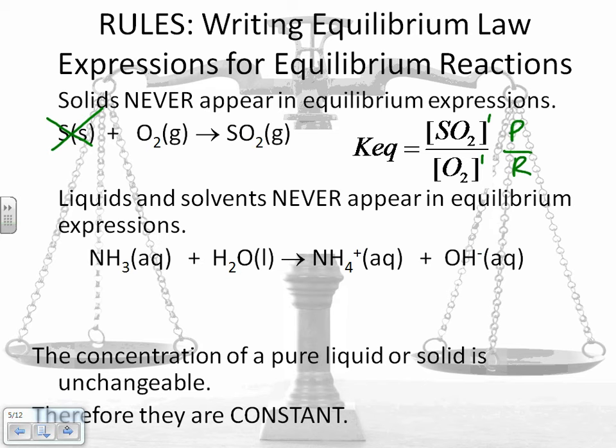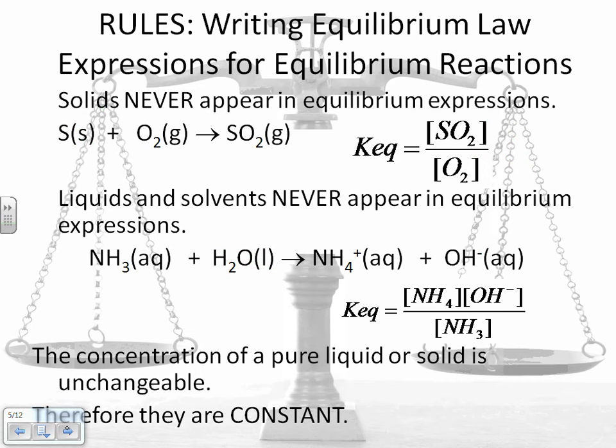For the second one, liquids and solvents never appear in the equilibrium expression. So for this one, I'm not going to bother writing in H2O because there's no concentration for water. So my expression would look like this. I've got my ammonia and my hydroxide ions on top. Those are my products. And I've got my reactants on bottom, but I didn't include water.